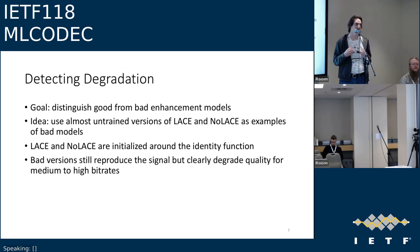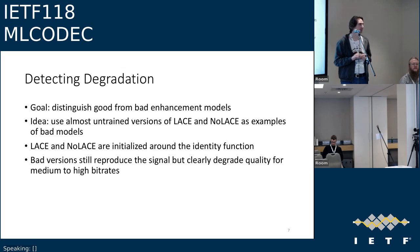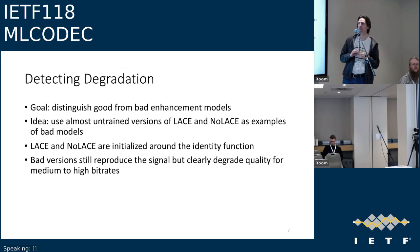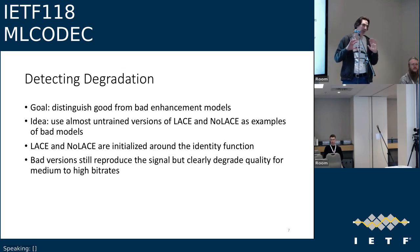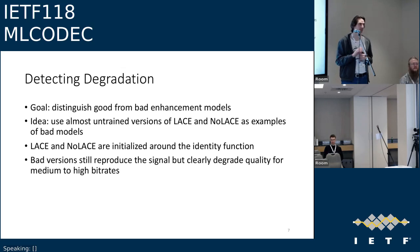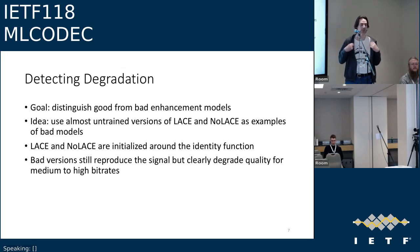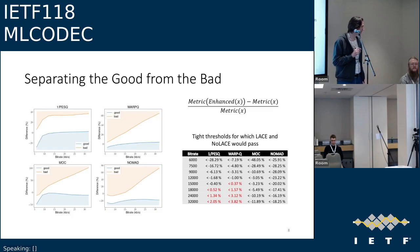To check whether metrics can detect degradation, we tested almost-untrained versions of LACE and noLACE as examples of bad models. When untrained, they are somewhat similar to the identity function — not a complete catastrophe, but a noticeable degradation. The results show all four metrics have a certain margin separating good from bad models, though the results are not completely satisfying for all metrics.